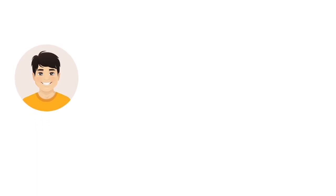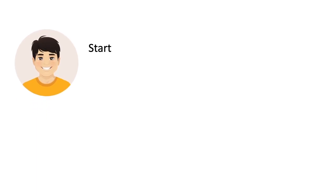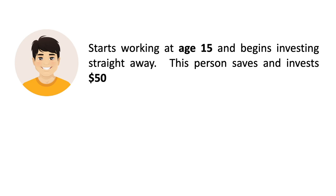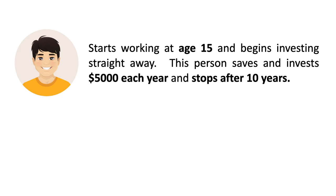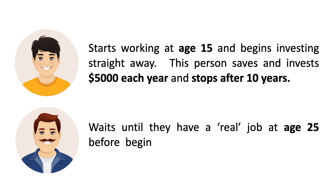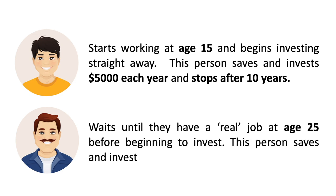It's the table where he shows that a person who starts working at the age of 15 and begins investing straight away. This person saves and invests $5,000 a year and stops after 10 years — we're going to call this person one. Then we have person two, who waits until they have a real job at age 25 before beginning to invest, saving and investing $5,000 each year until the age of 60.